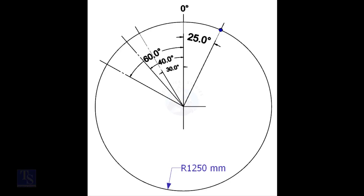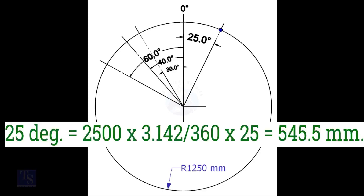Mark the zero-degree line. As per the drawing, zero-degree is rotated 25 degrees anti-clockwise from the center of the weld joint. We have the included degree and the diameter of the tank. Let us calculate the arc length. Arc length for 25 degrees is equal to outer diameter multiplied by 3.142, divided by 360, multiplied by 25 — which equals 545.5 millimeters.